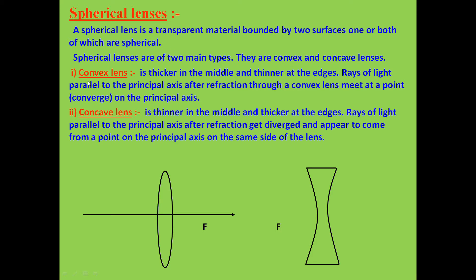A convex lens is thicker in the middle and thinner at the edges. As you can see in this first diagram, it is thicker in the middle and thinner at the upper and lower edges.